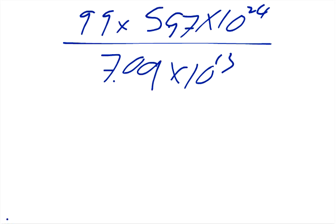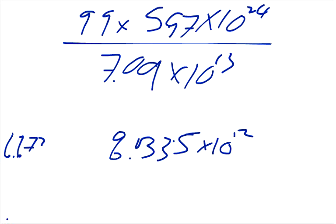the answer you get is 8.335 times 10 to the 12th, and then you still have to multiply this by the gravitational constant, which is 6.673 times 10 to the negative 11th, so you multiply that together,